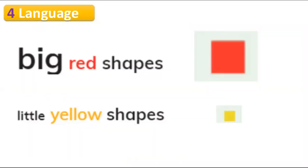Today we also learned about size and color. This is the big one — can you see it? It's a big red shape. And this is the little yellow shape.